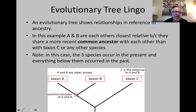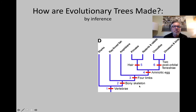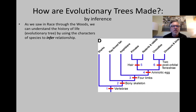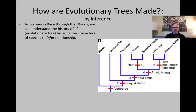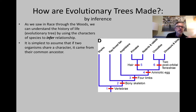This population — the ancestor of A and B — is no longer alive, but it existed sometime in the past. The common ancestor of all three existed farther back in the past, which is why A and B are more closely related to each other than either of them is to C. How are evolutionary trees made? By inference, of course. As we saw in Race Through the Woods — that lab exercise we did — we can reconstruct an evolutionary tree by using the characters of species to infer what the tree must look like. We start with the simple assumption that if two organisms share a character, it came from their common ancestor.